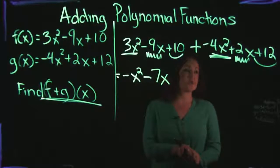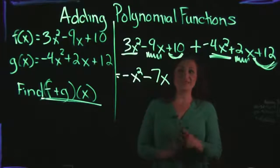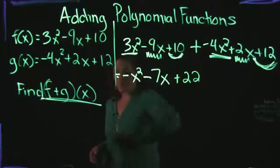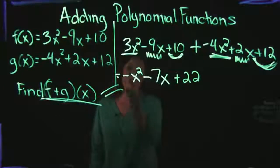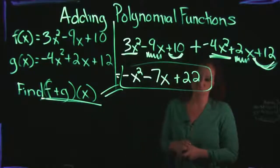Our last set of like terms are our numbers, and we have 10 along with 12. So if we add those together, we get 22. So therefore, that lets us know that f plus g of x is equal to negative x squared minus 7x plus 22. And that's how you add polynomial functions together.